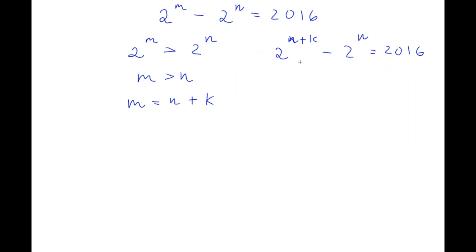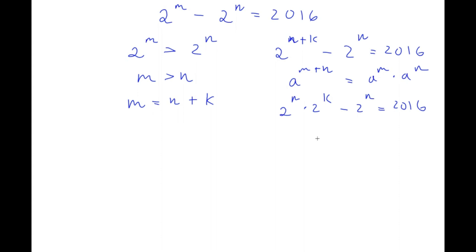Now, we have 2 to the power of n plus k, and I want to simplify this. This is in the form a to the power of m plus n, which equals a^m times a^n. So 2^(n+k) equals 2^n times 2^k. This gives us 2^n times 2^k minus 2^n equals 2016. Because both terms have 2^n, I factor it out: 2^n times (2^k minus 1) equals 2016.